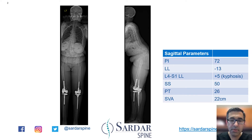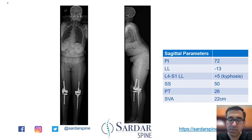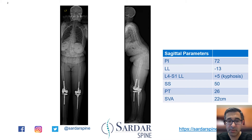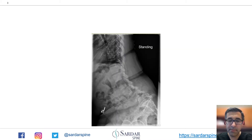Here are the full standing AP and lateral x-rays of this patient. You can see that the patient has quite a significant mismatch of their pelvic incidence to lumbar lordosis. Their lordosis is only 13 degrees with a PI of 72 degrees. From L4 to S1 they actually have a kyphosis of about five degrees, giving them a total SVA of more than 20 centimeters.